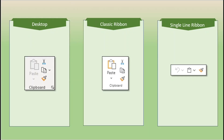Now let's look at the first group on the left, which is for the most part the clipboard group. As we look at the clipboard group of the Home tab for the three different versions of the ribbon, we'll see that with the desktop version, we have cut, copy, paste — and paste has a dropdown, meaning there are several ways that we could paste in information — and then we have the format painter.